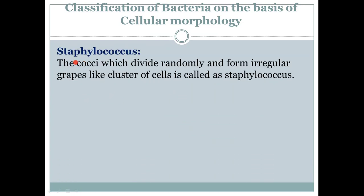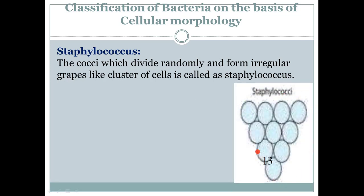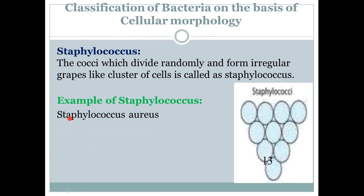Now come to staphylococci. Cocci which divide randomly and form irregular grape-like clusters of cells are called staphylococci. 'Cluster' means joined together in an irregular grouping. As you can see here, it looks exactly like a bunch of grapes — that is staphylococci. The example is Staphylococcus aureus.